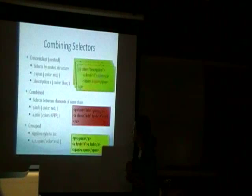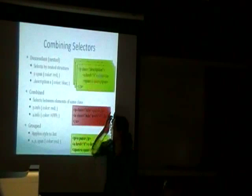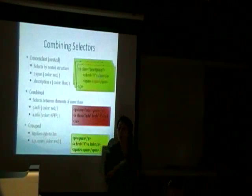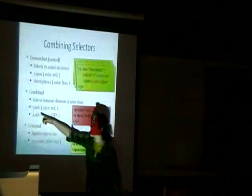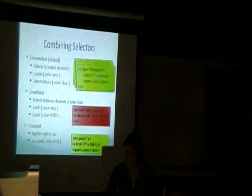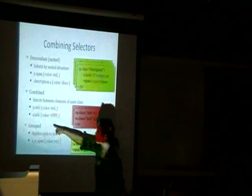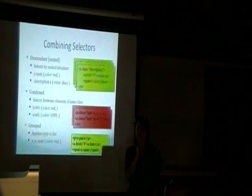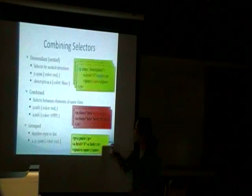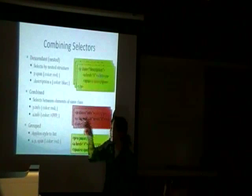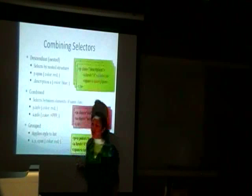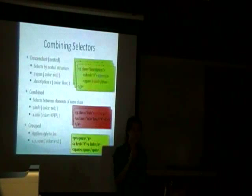You can also combine selectors to select elements of a specific type and class together. For example, 'p.info' finds a paragraph element that also has class info. And 'a.info' would find a link element with class info. You can do the same with IDs using the pound sign — 'p#info' would find a paragraph with ID info.